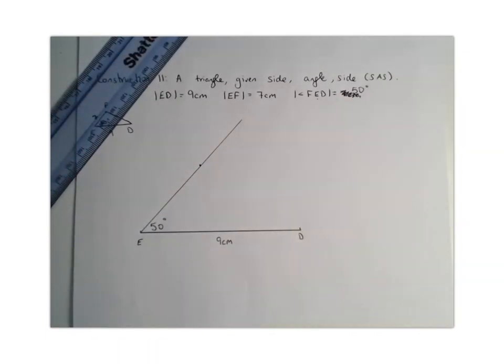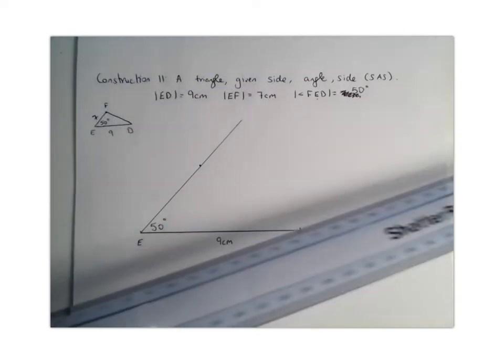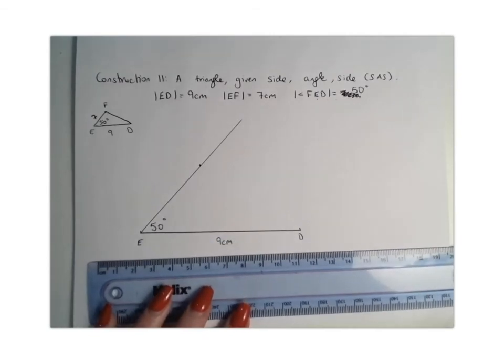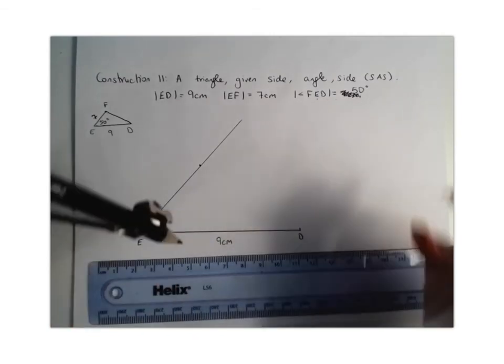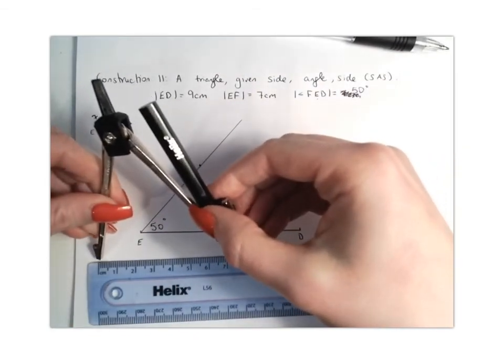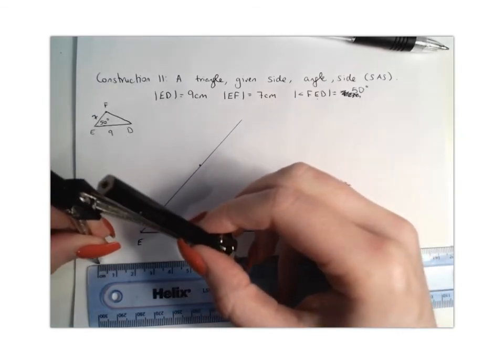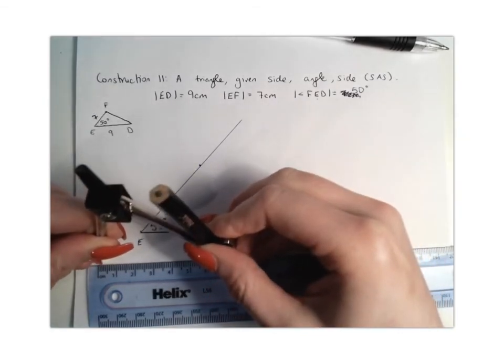Now I want to find where along that line is 7cm. So what we're going to do next is you're going to get your ruler and measure your compass 7cm. You're going to stretch it out to 7cm.